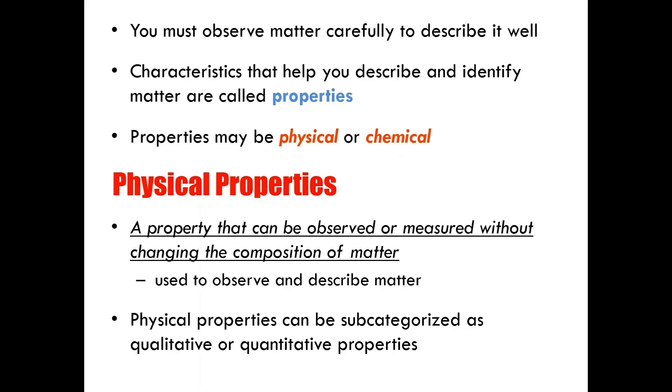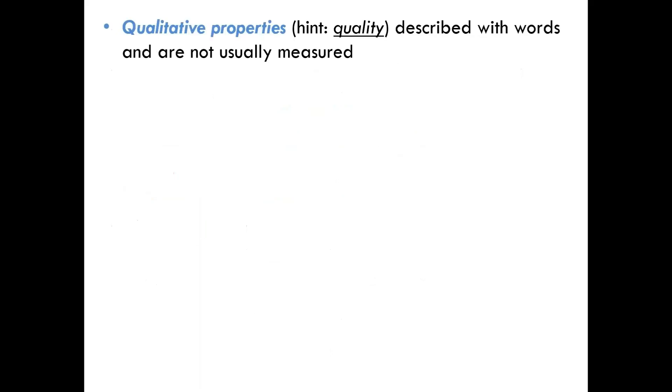Physical properties can be subcategorized as qualitative or quantitative properties. Qualitative properties relate to the quality of a material. They're described with words and are not usually measured. So, for example, is a material hard, soft, bright, or dull?